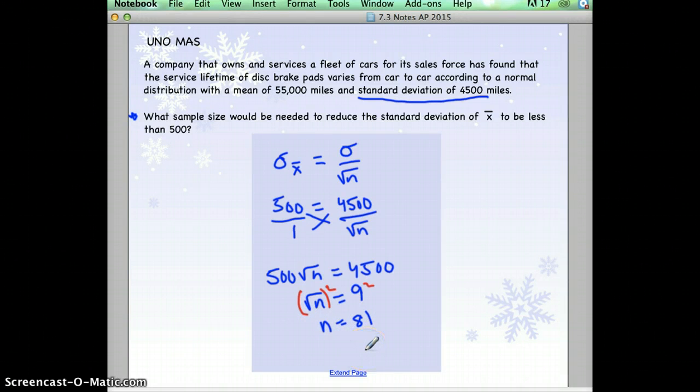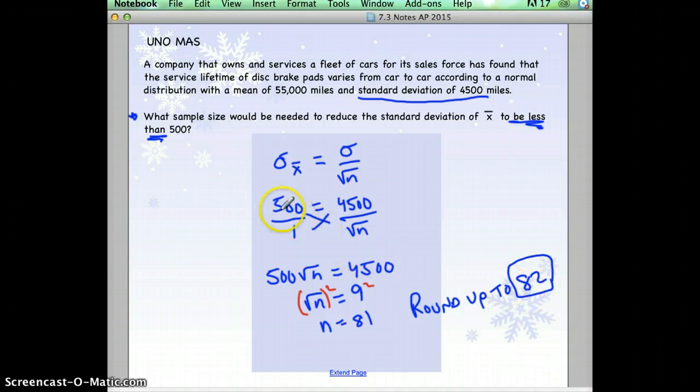So n would equal 81. Now, just be careful. Remember that side note from yesterday. We want our standard deviation to be less than 500. So should we have a bigger number than 81 or a smaller number than 81? Well, in math, the bigger your denominator is, the smaller your answer will be. So we want n to be bigger. So we're going to round up to 82. 82 will make our standard deviation smaller than 500. 81 makes it exactly equal to 500. 82 would make it less than 500.